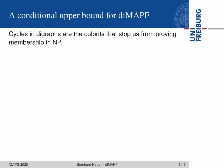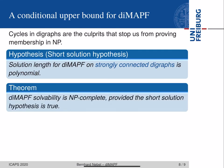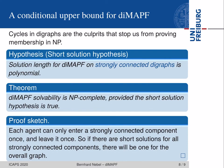Can we do any better than that? We can establish a conditional upper bound for DIMAPF. Cycles in digraphs are the culprits that stop us from proving membership in NP. If we assume that the solution length for DIMAPF on strongly connected digraphs is polynomial — which sounds quite plausible — then we can easily prove that DIMAPF solvability is NP-complete. The reason is that each agent can only enter a strongly connected component once and leave it only once, so if there are short solutions for all the strongly connected components, there will also be a short solution for the overall graph.